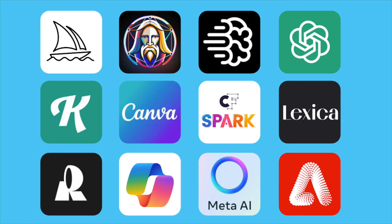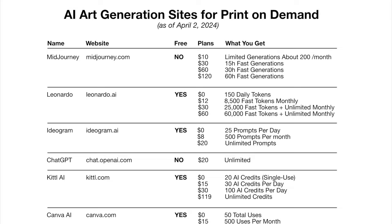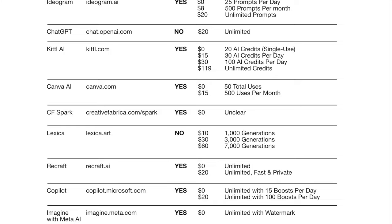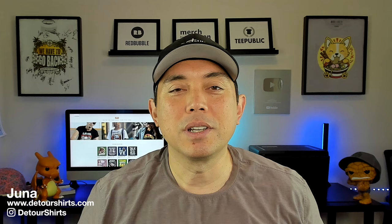So those are 12 different text-to-image apps you can use online — some free, some not. I've made a reference table with names, links, and prices that I'll put on my downloads page. I wouldn't suggest subscribing to all of them — find the one that works best for your style and use it for print on demand. If you don't know how to use AI for print on demand, check out my other video where I go step by step on using AI for t-shirt design. Thanks for watching, keep creating and keep learning!